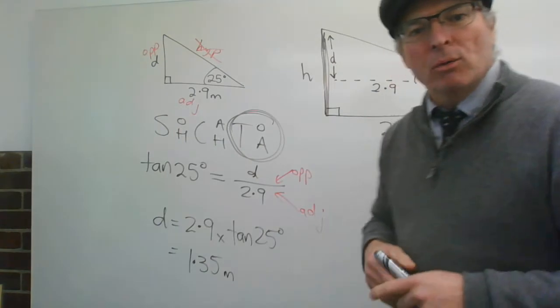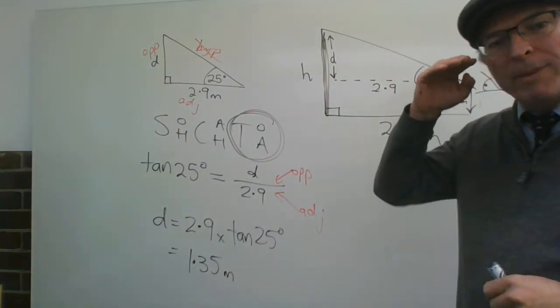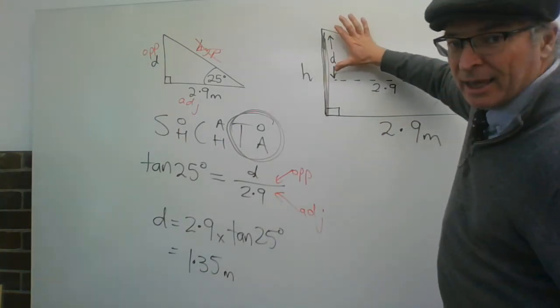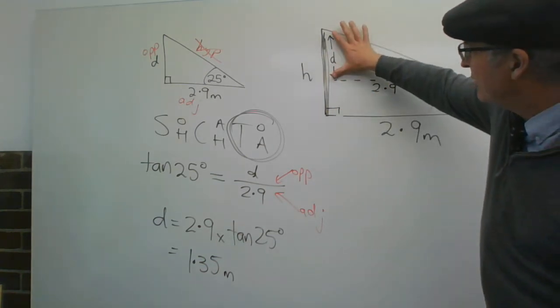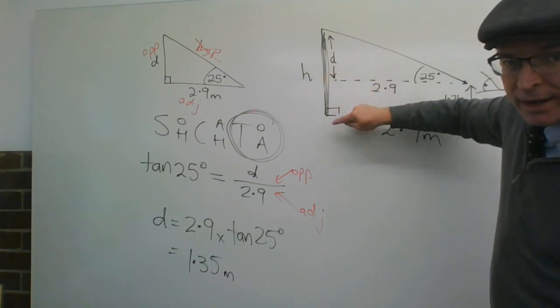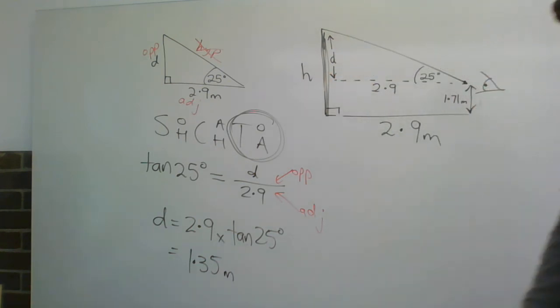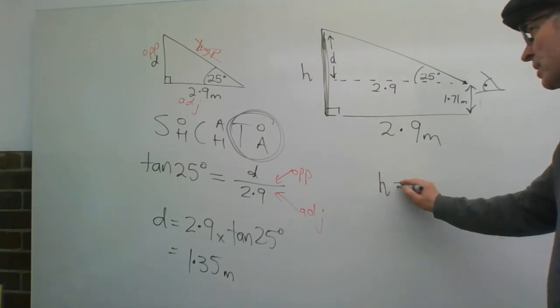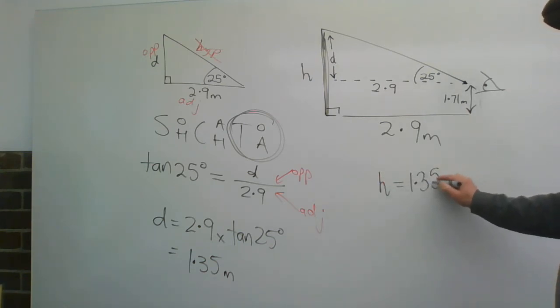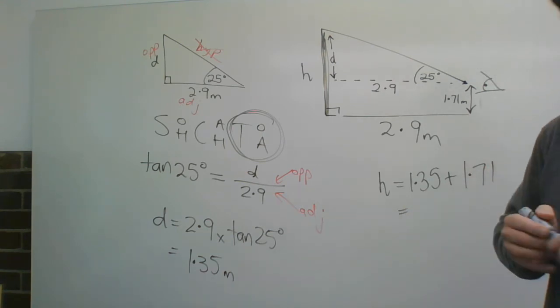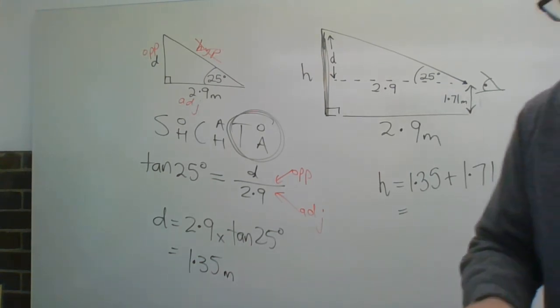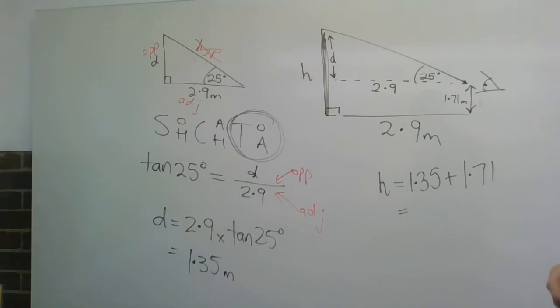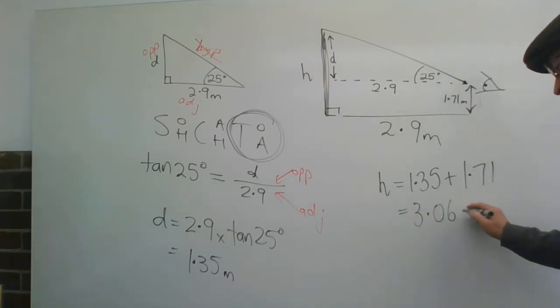Now, remember, D was the height from my eyeball, basically, to the roof. It was this bit here. I need to add on the extra 1.71. So, the D plus the 1.71 gives me the height that I need all the way to the top. So, H is equal to D, which is 1.35, plus the height up to my eyeball, which is 1.71. So, I get 3.06 metres.